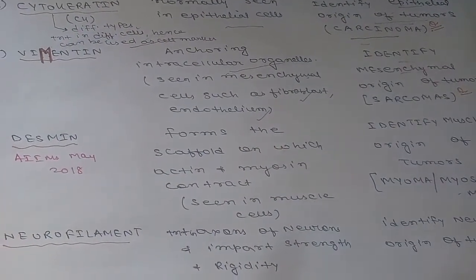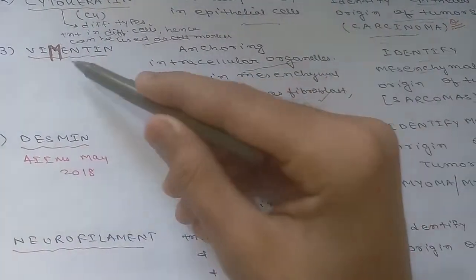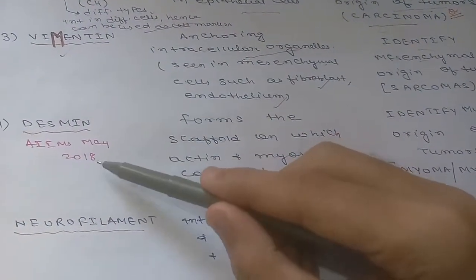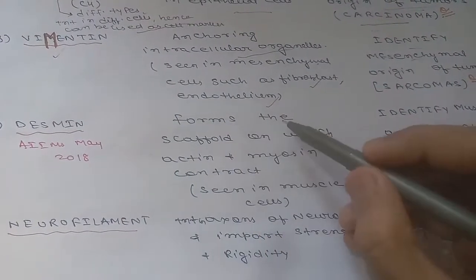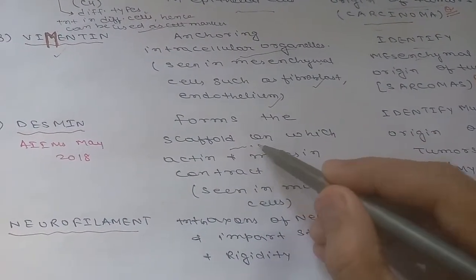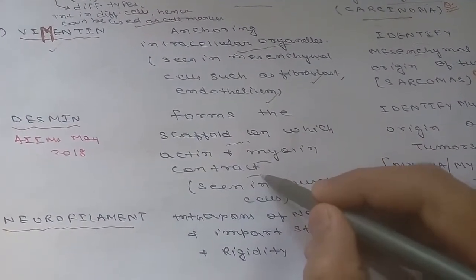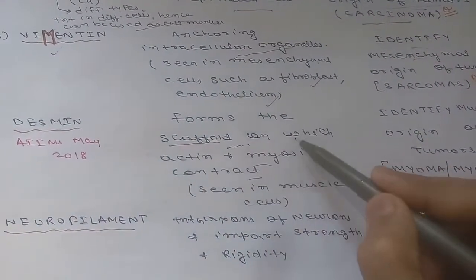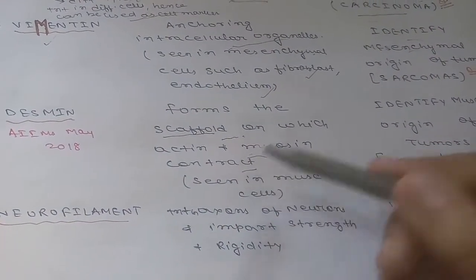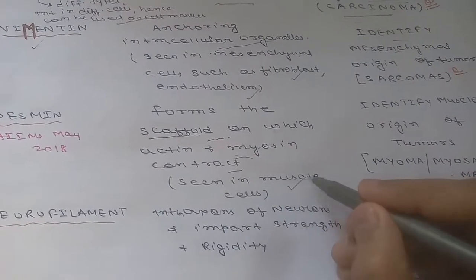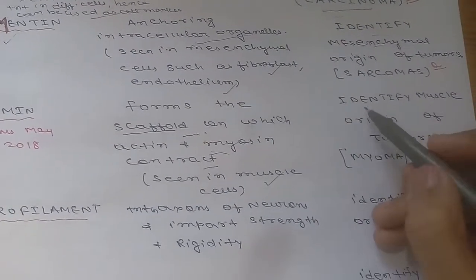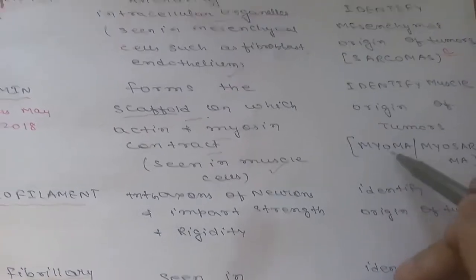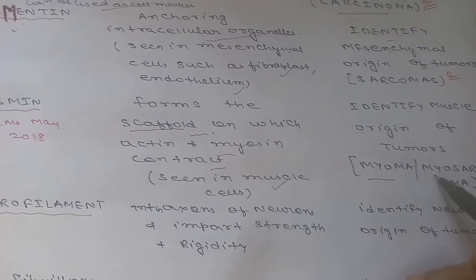Next is desmin, which is responsible for forming a scaffold on which actin and myosin contract. It is seen in muscle cells, because actin and myosin are responsible for muscle contraction. Desmin is used for identifying muscle origin of tumors, that is myoma, sometimes also called myosarcoma.